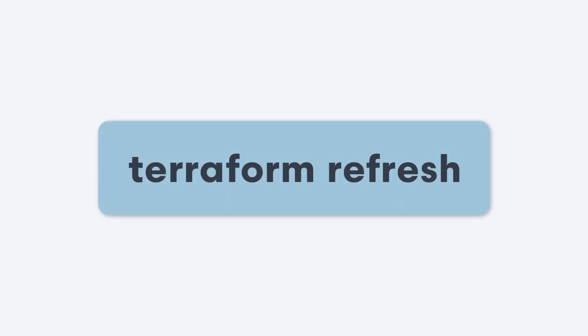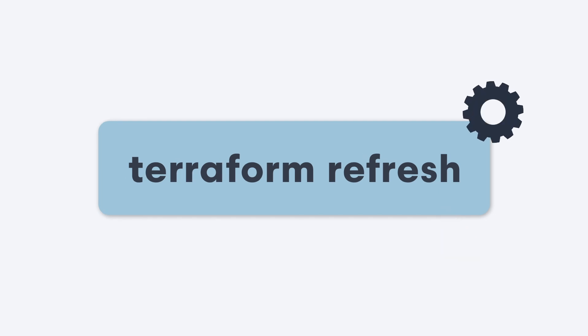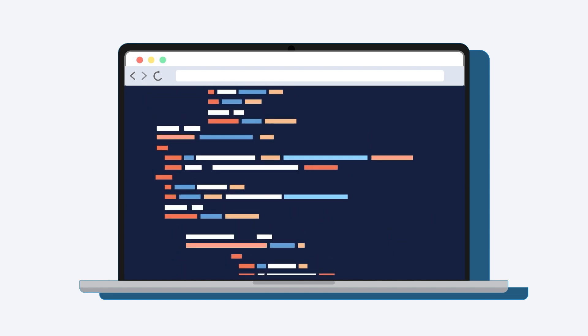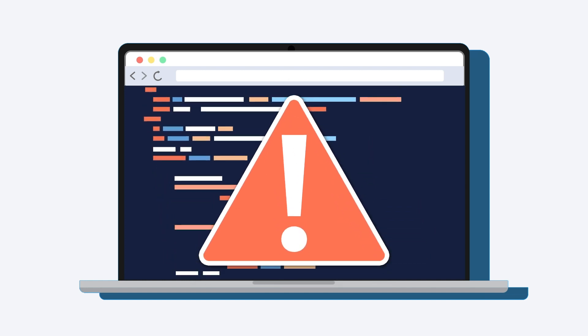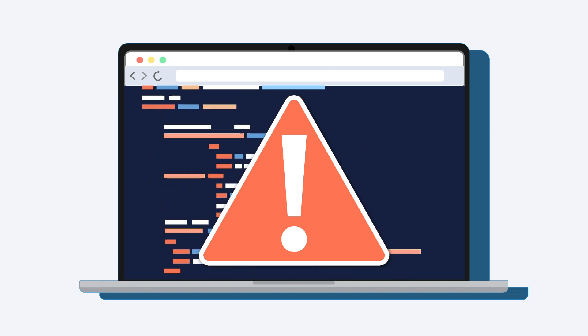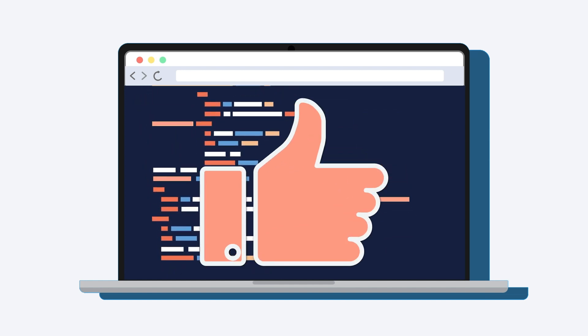One of the ways to ensure that you don't encounter configuration drift is by using the command terraform refresh. When you run this command, you reconcile the resources tracked by the state file with the real world. Terraform will query your infrastructure providers and find out what's currently running in production, then update the state file with this information. However, it's important to note that Terraform only refreshes resources under its management, and although the state file is updated, running terraform refresh does not modify any infrastructure or resources. The benefit of this command is that you're able to detect configuration drift, see what's out of sync, and update what needs to be updated.